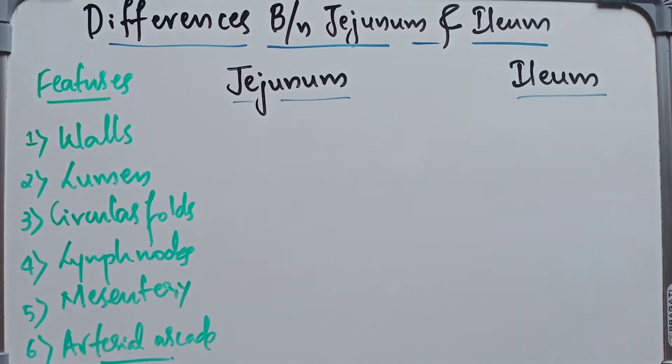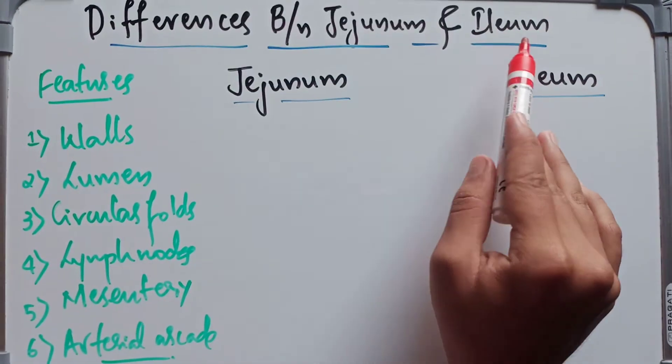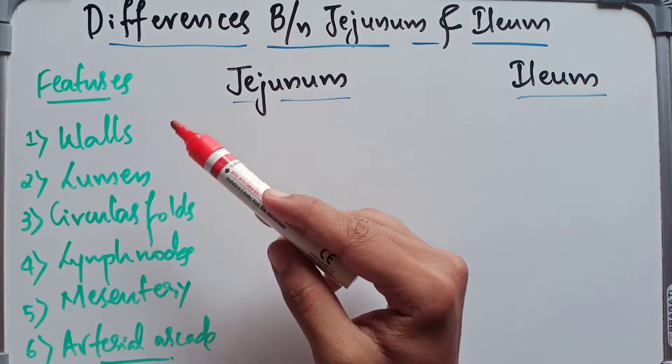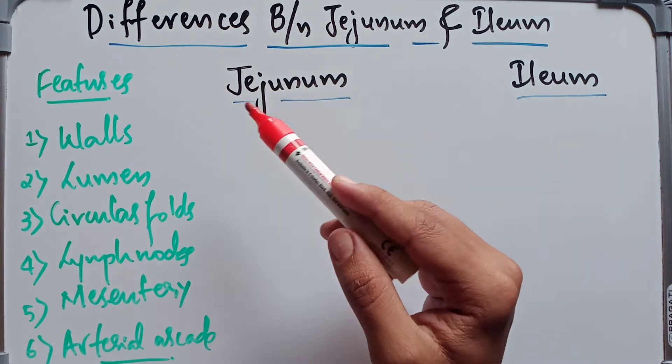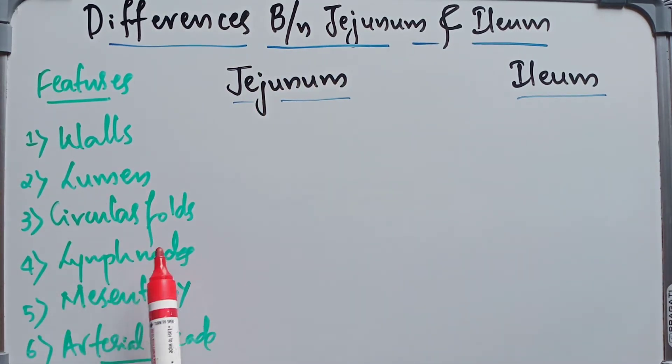Hello guys, welcome to my time. In this video we are going to look at the differences between the jejunum and ileum — what are all the differences. We are going to look at the walls, lumens, circular folds, lymph nodes, mesentery, and the arterial arcade.